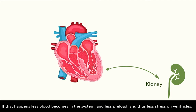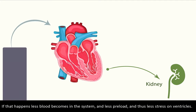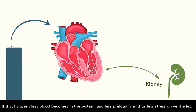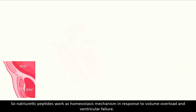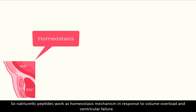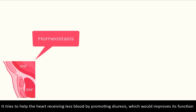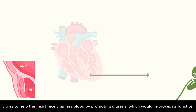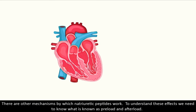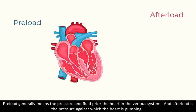If diuresis happens, less blood becomes in the system, and less preload, and thus less stress on ventricles. So natriuretic peptides work as a homeostasis mechanism in response to volume overload and ventricular failure. They try to help the heart receive less blood by promoting diuresis, which would improve its function. There are other functions and mechanisms by which natriuretic peptides work.